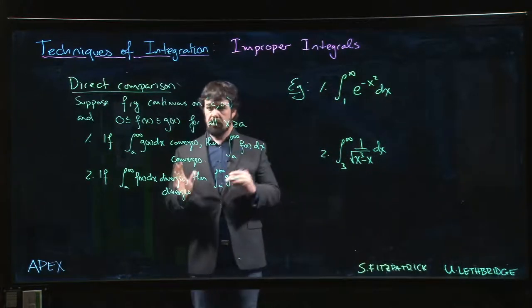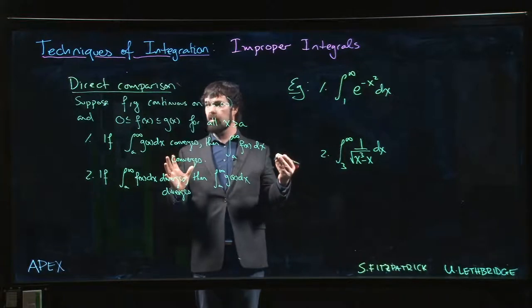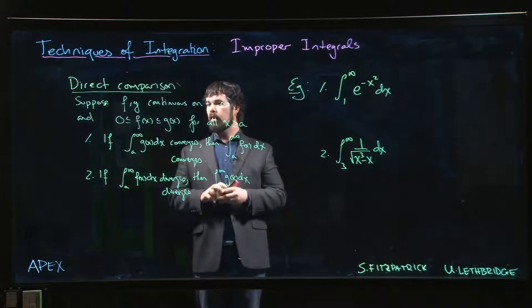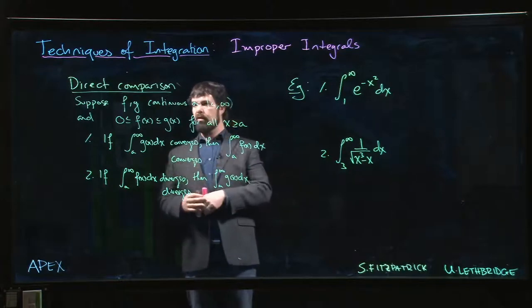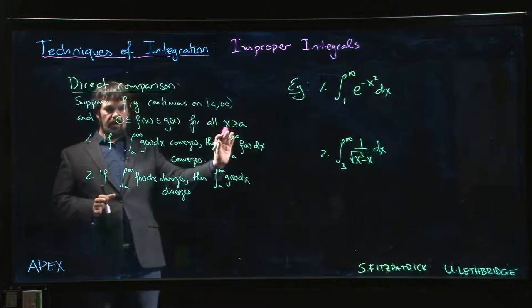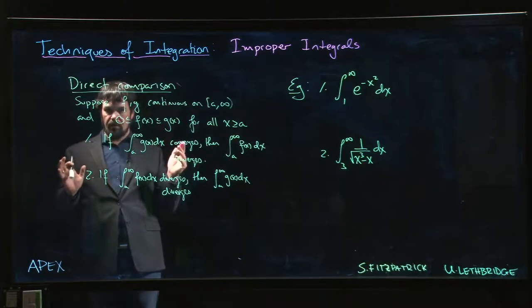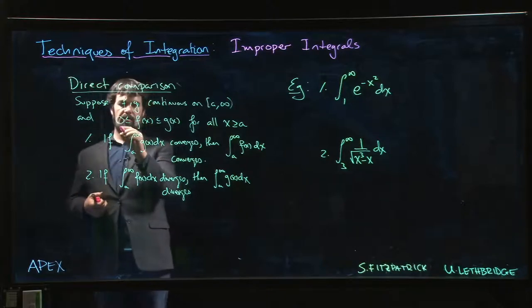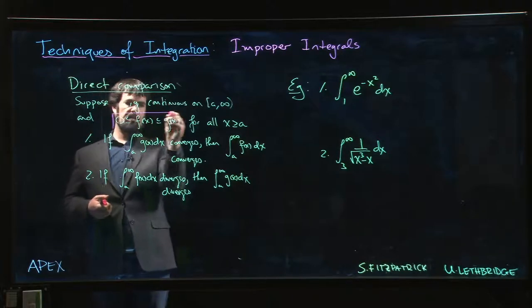All right, so now we're going to move on to techniques for deciding convergence of integrals that doesn't necessarily involve evaluating them. The main tool is comparison. So the idea is if you've got an unknown integral, you want to figure out how to compare it to one where you do know what's going on. And so the key is to have an inequality like this.